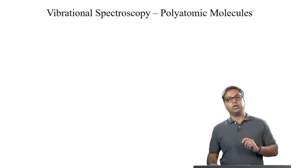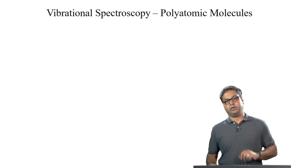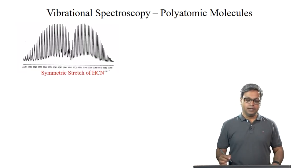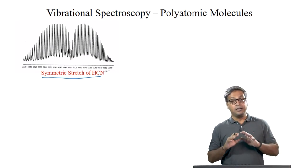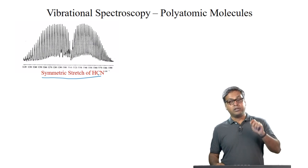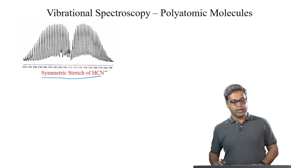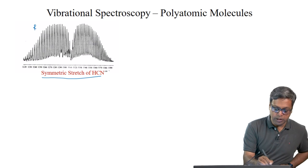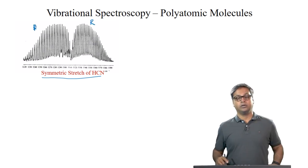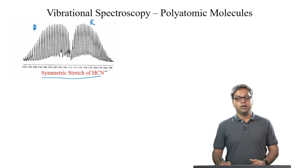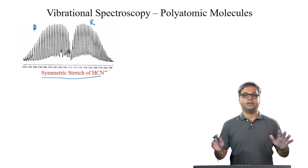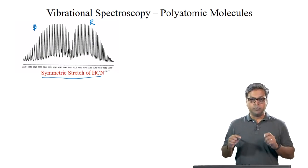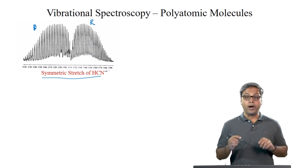Now let us look at some real spectra. Here is the symmetric stretch of HCN, which is a linear molecule. For this vibration we get P and R branches — a PR band profile — with nothing in the center. This must therefore be a parallel vibration.